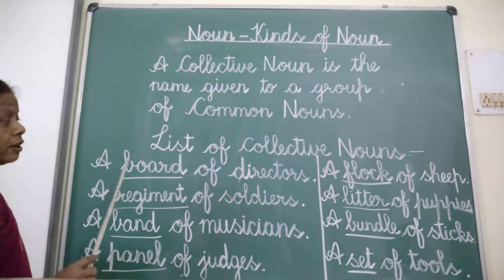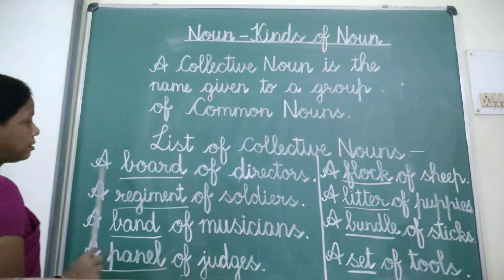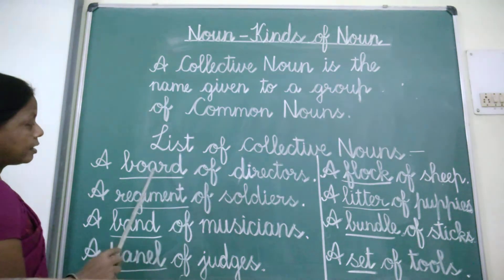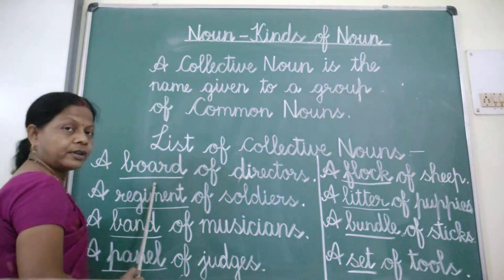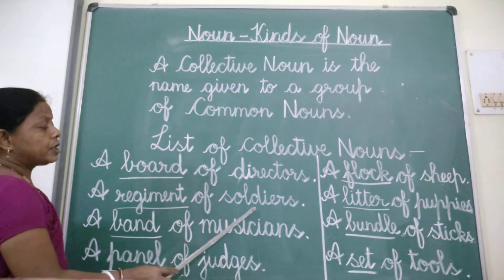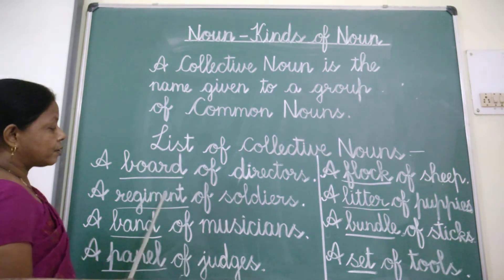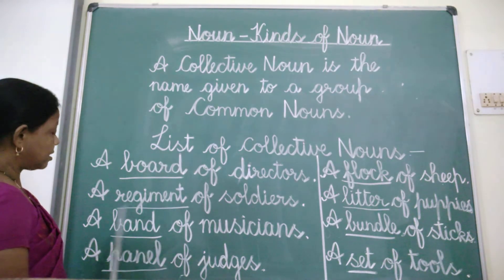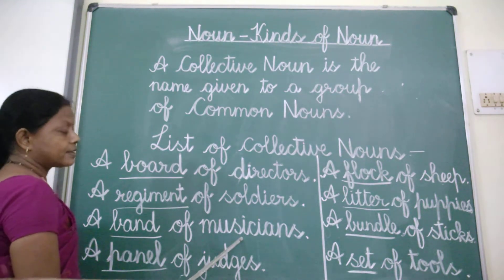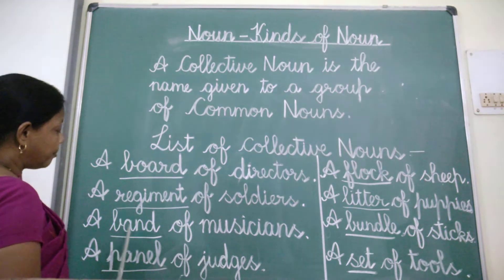So what will be the group of directors? A board of directors — here 'board' is a collective noun. A regiment of soldiers — a group of soldiers is known as a regiment. A band of musicians — a group of musicians is known as a band.